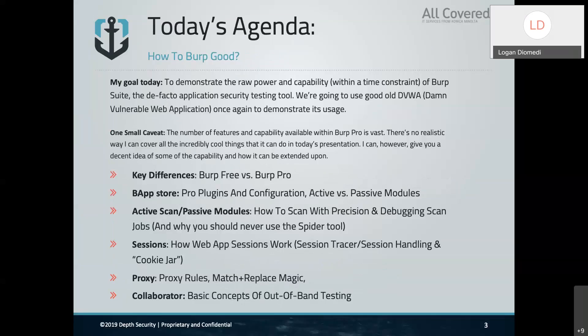Our agenda today is 'how to Burp good.' We're going to demonstrate the raw power and capability within our time constraint. The number of features available within this tool is extremely vast — there's no way to cover all of it in an hour, you could spend weeks. I'll give a rundown of what I think the heavy-hitting tools are. We'll cover the Burp application store, why it's so important in the Pro edition, the active scan and passive modules, session management, proxy rules, match and replace magic, and Burp Collaborator for out-of-band testing.